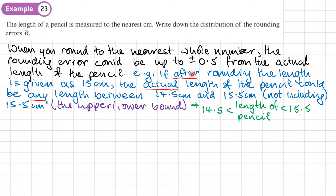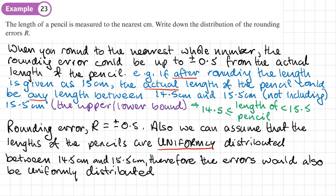So here's an example. If after rounding the length is given, the length of the pencil is given as 15 centimeters after it's been rounded to the nearest centimeter, the actual length of the pencil could be any length between 14.5 centimeters and 15.5, obviously not including 15.5. So these values are the upper and lower bound of 15. And we can write it as an inequality like this. So greater than or equal to 14.5 centimeters, but less than 15.5. Now this question is about the rounding errors R. So the rounding error is going to be from plus 0.5 to minus 0.5.